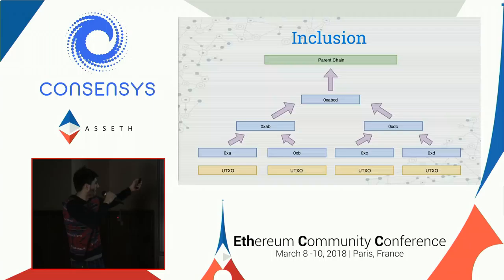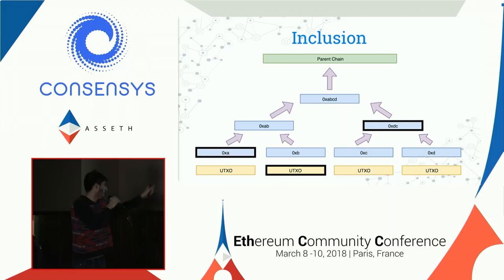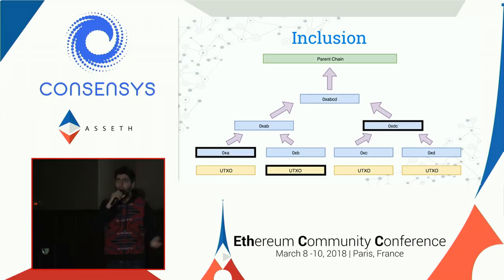Through that Merkle root we can prove that Alice had ownership of one of these UTXOs at a given time. We create the path of hashes leading up to the root — Alice submits her UTXO along with the necessary hashes to recreate the root of the Merkle tree — and through that she has proof she owned it at a given time. It's significantly easier to just store a root on Ethereum than the entire UTXO set.